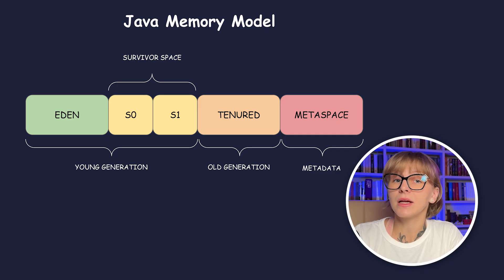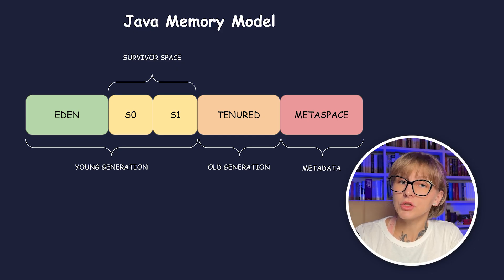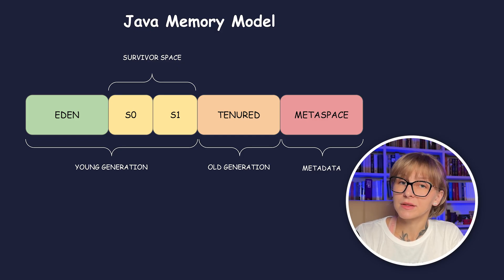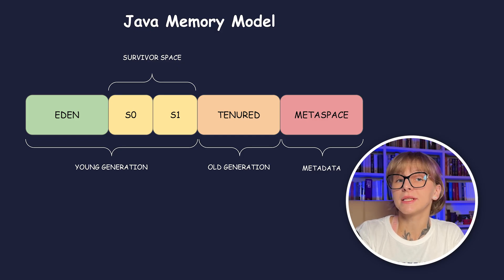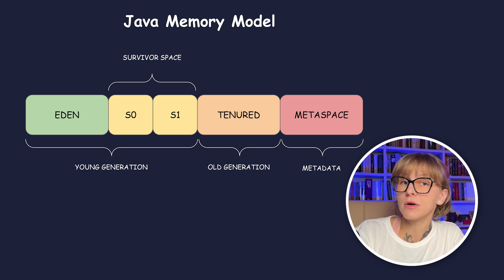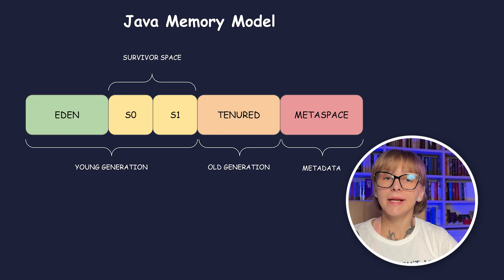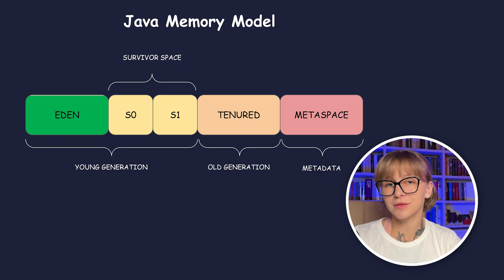Eden space and two survivor spaces are where young objects live. Tenured space preserves the old generation. Metaspace stores metadata — it replaced permgen used in Java versions earlier than JDK 8. When any of these spaces fill up, garbage collection occurs.